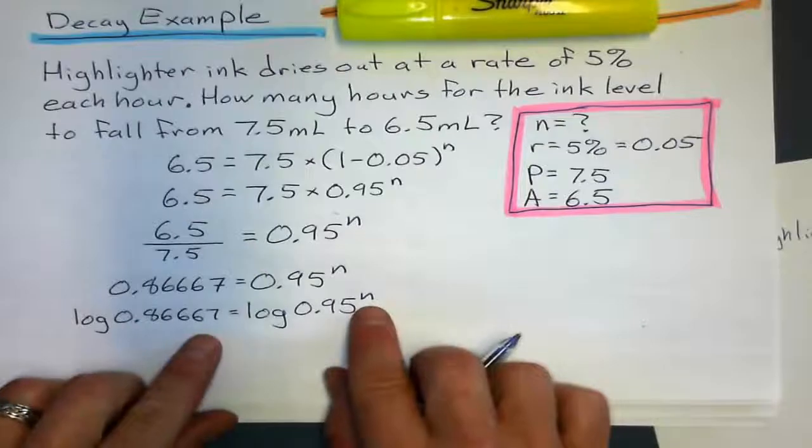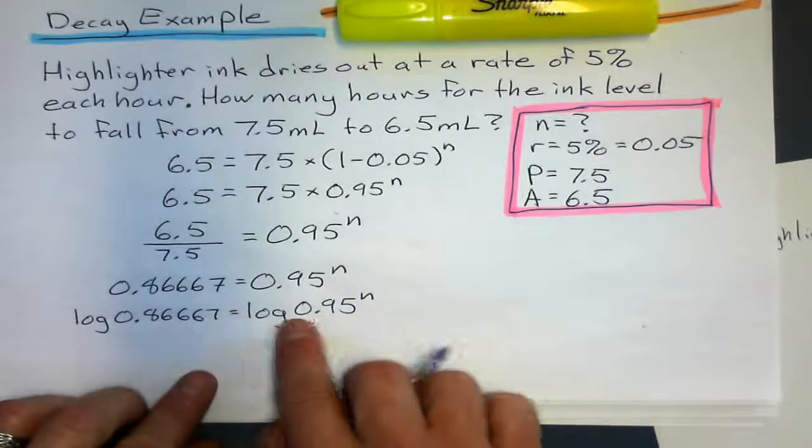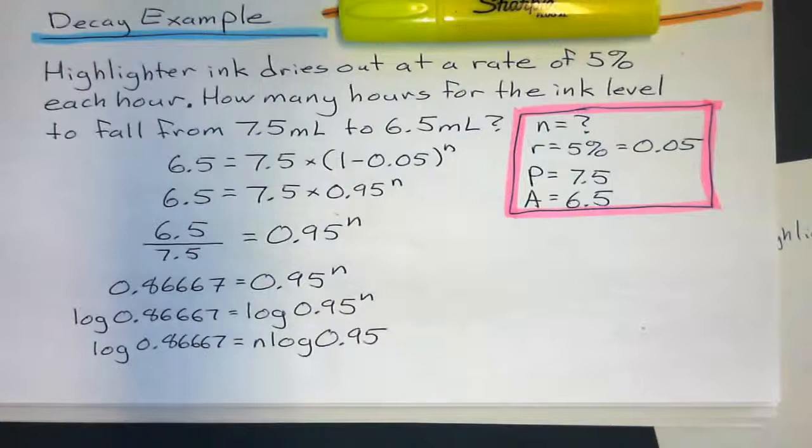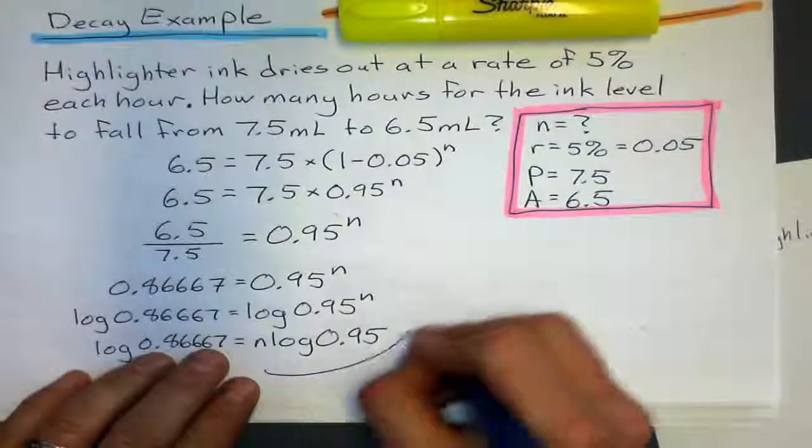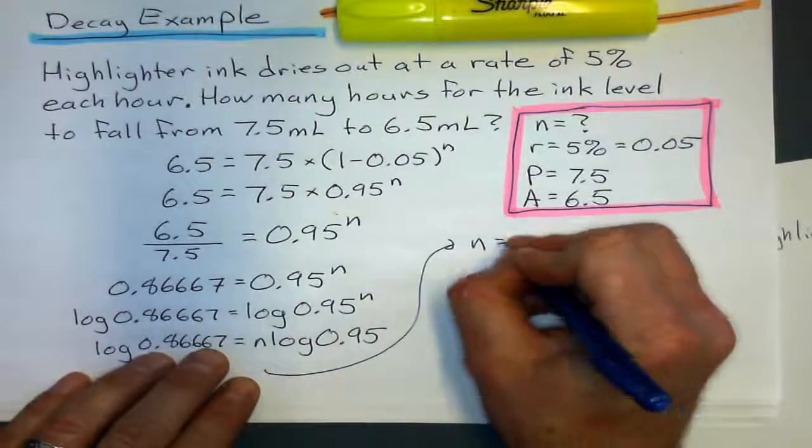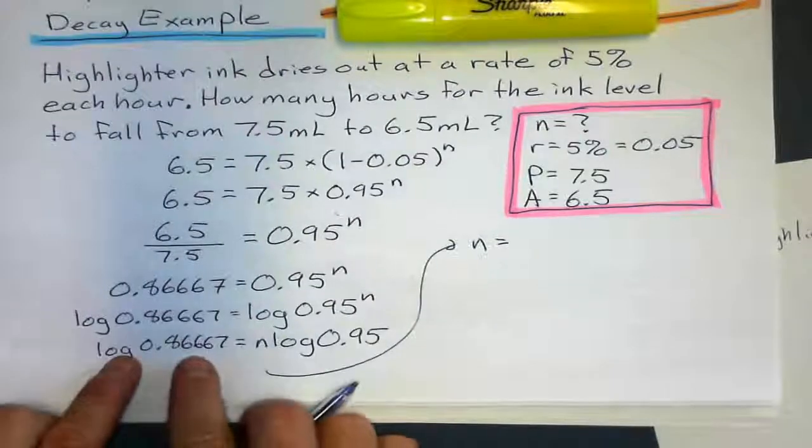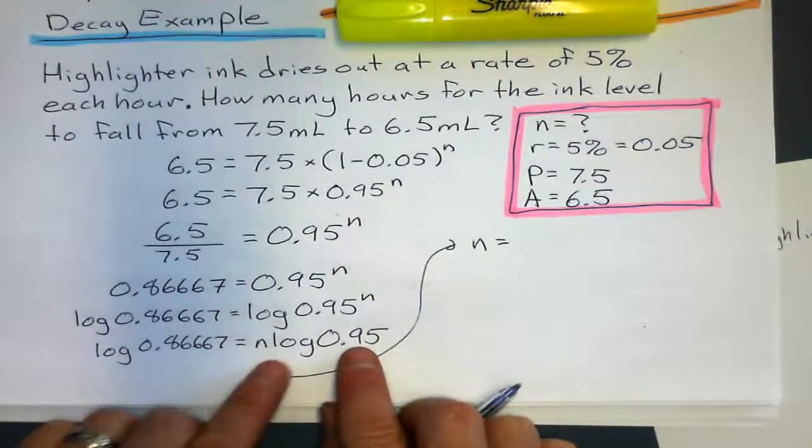After we do that, we rewrite the expression saying N times log 0.95. And finally, to solve for N here, which I'll put over here, it's going to be this value divided by log 0.95.